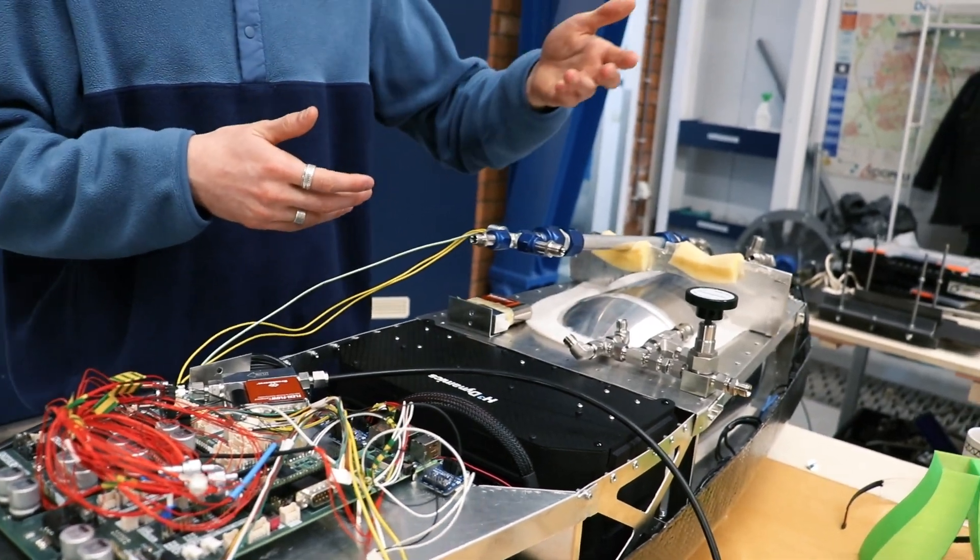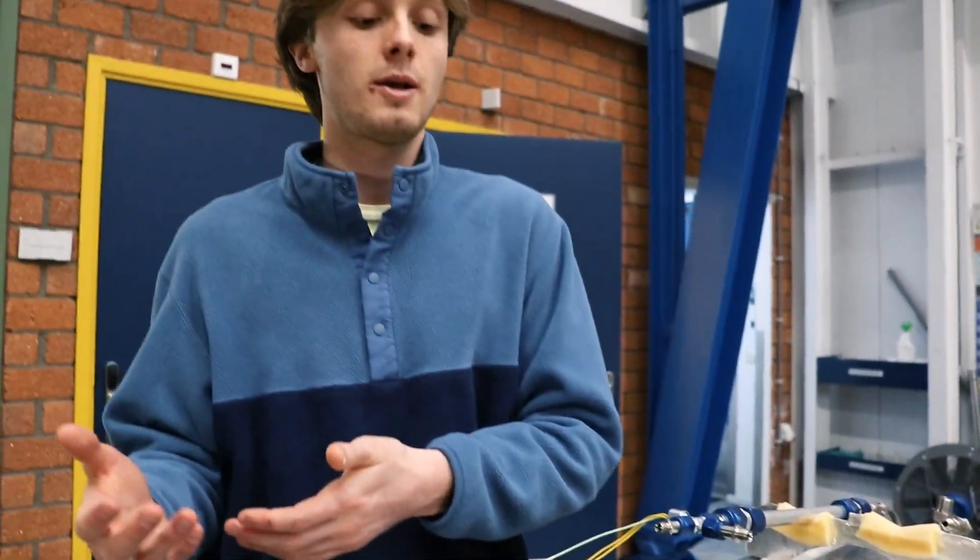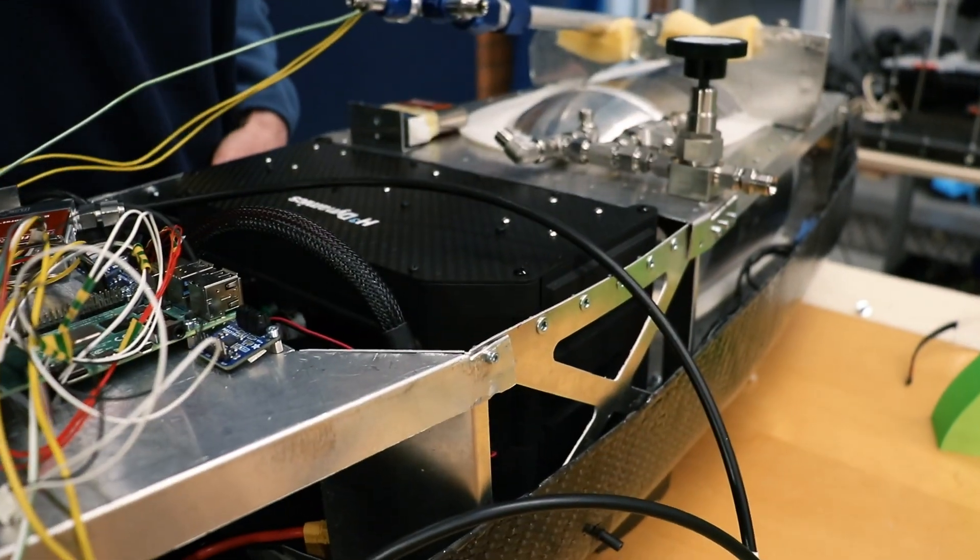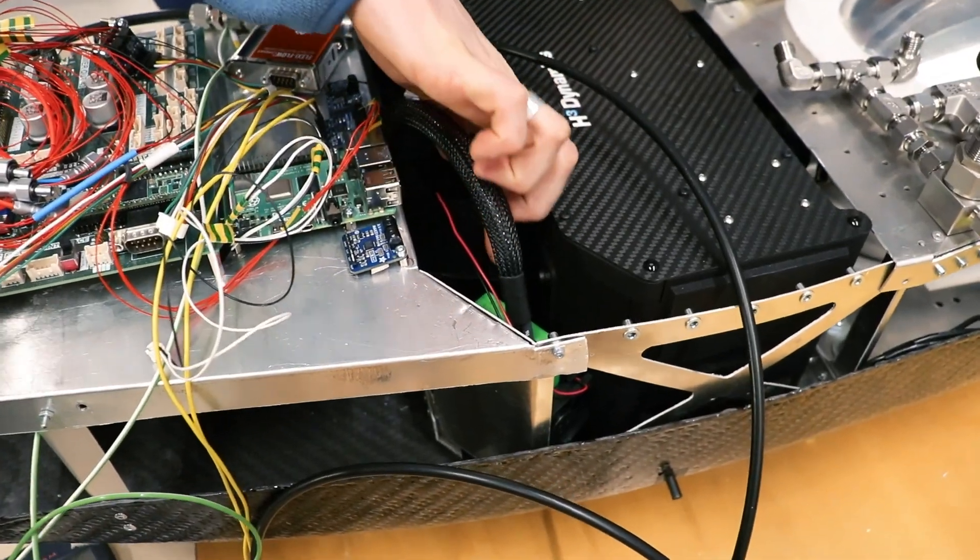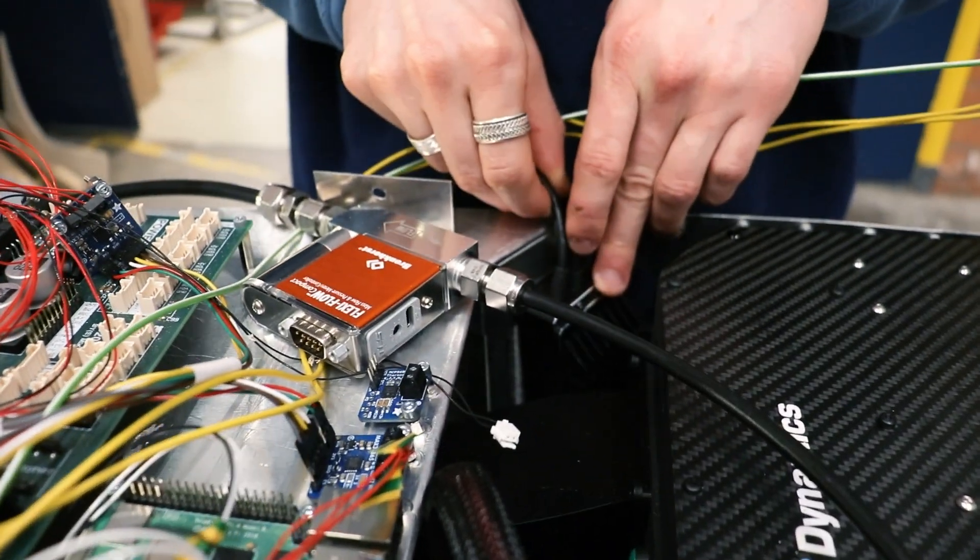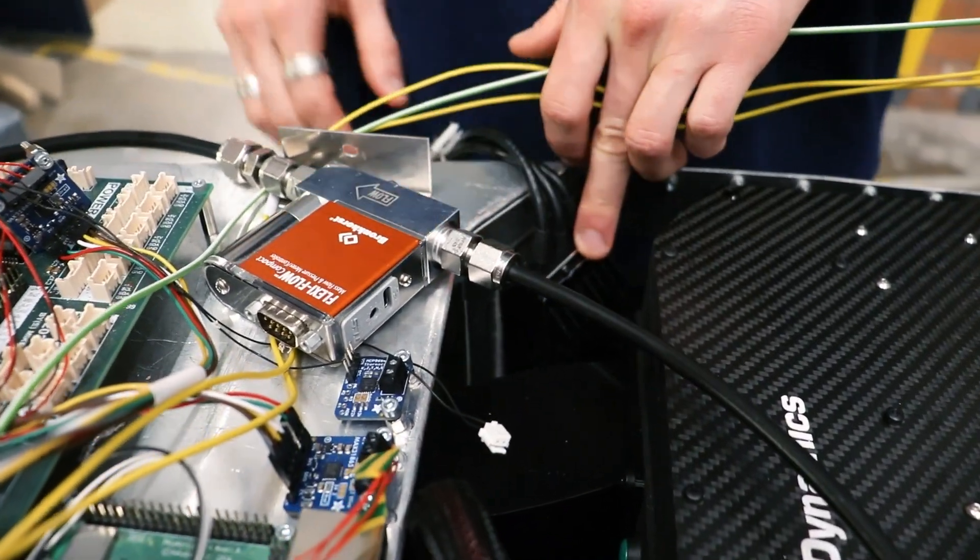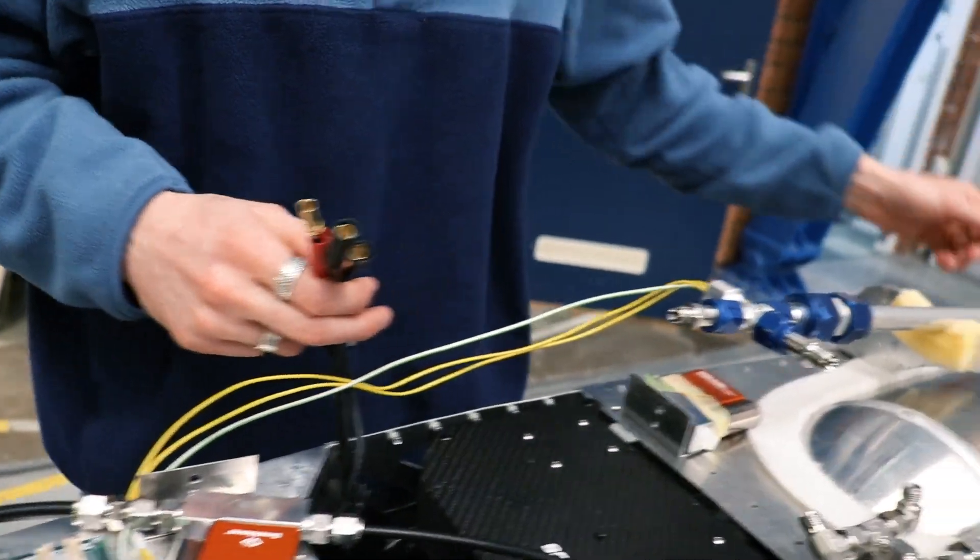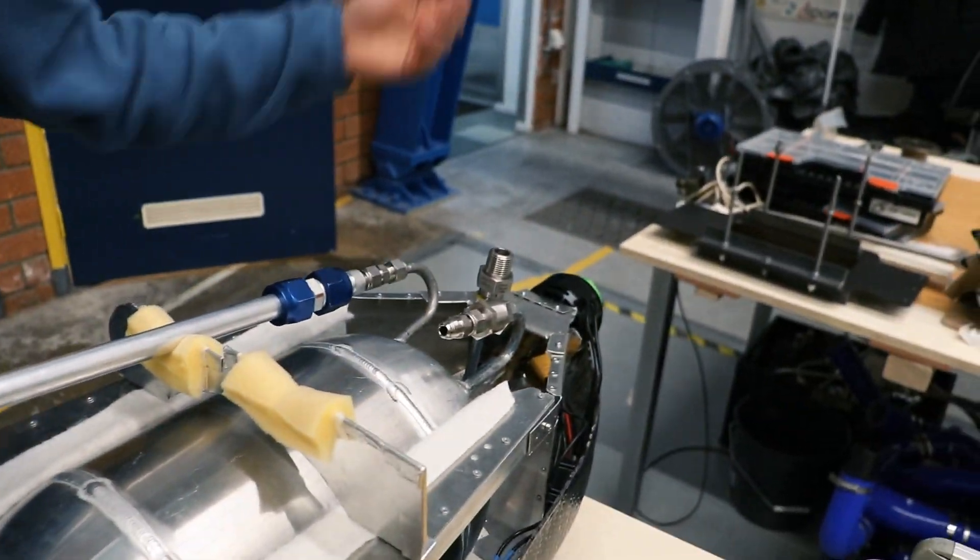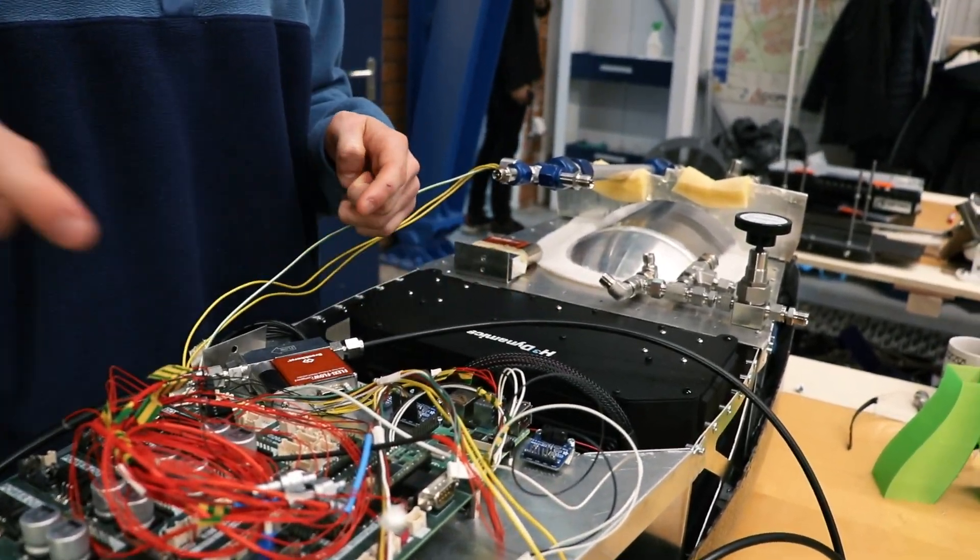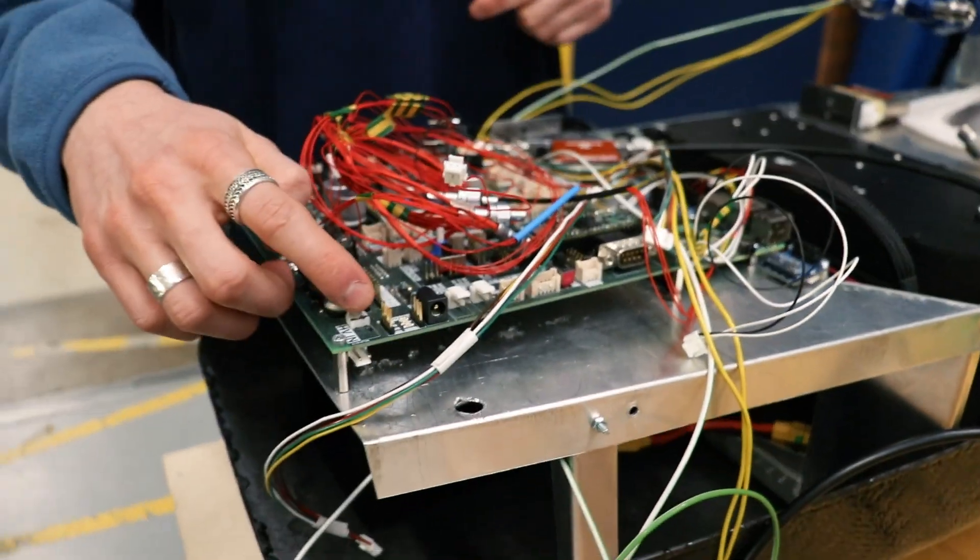Sometimes our fuel cell doesn't provide enough power and we need extra boost from the batteries. That's why we have this hybrid card. It needs some extra cooling so it has a heatsink. The power then continues from the hybrid card to on one side our ESC. This is our electronic speed controller and it turns the DC current coming from the fuel cell and the batteries into three phase AC that we can use to spin our motor. Another part of the power gets distributed to the high voltage side of the control board.